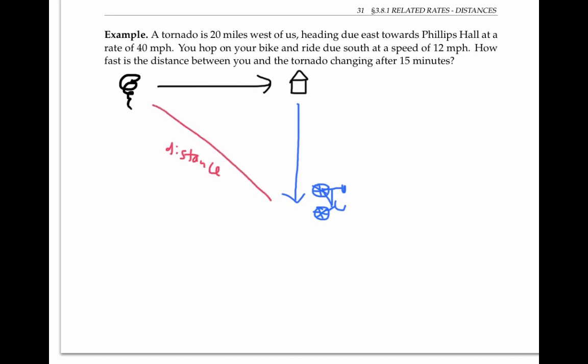In a related rates problem, it's always a good idea to draw a picture first. That can help you uncover the geometry of the problem and see how quantities are related. In this problem, we have a right triangle, because the tornado is traveling due east and the bicycle is traveling due south at right angles.